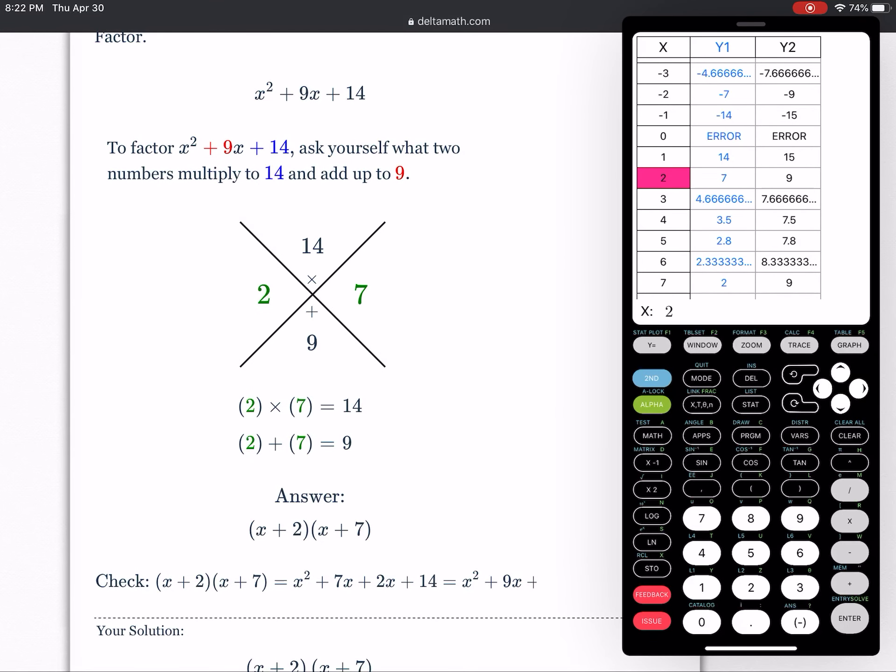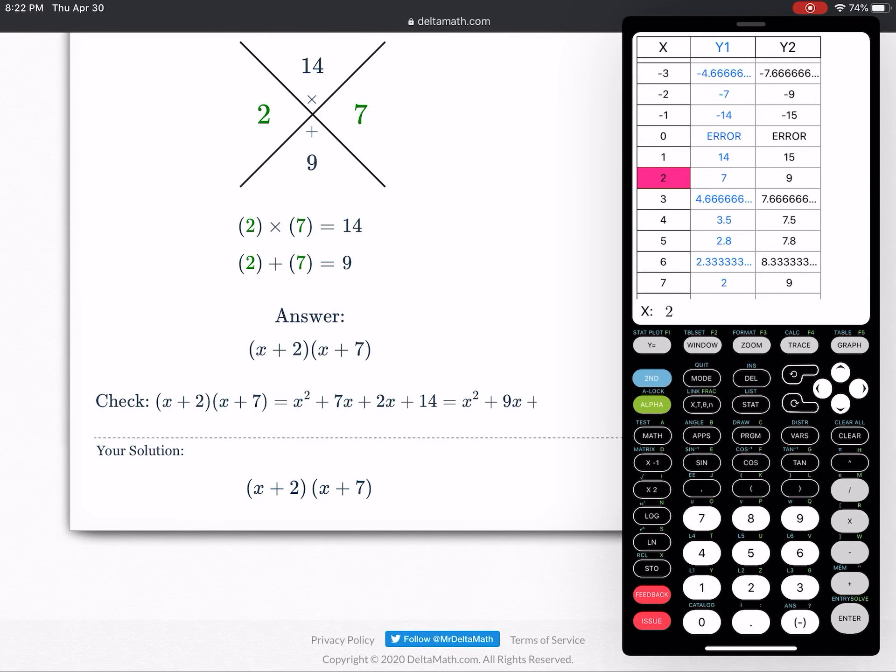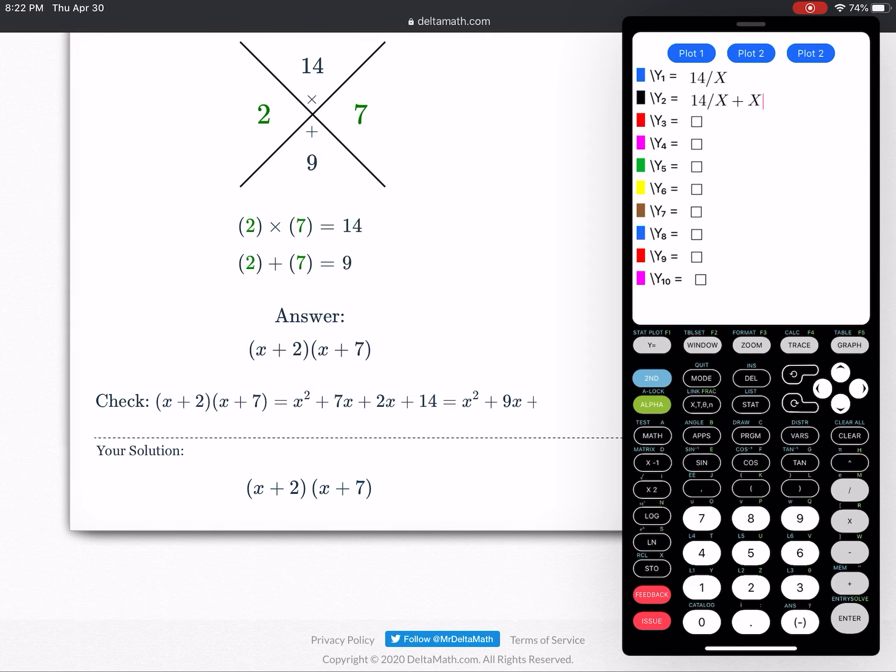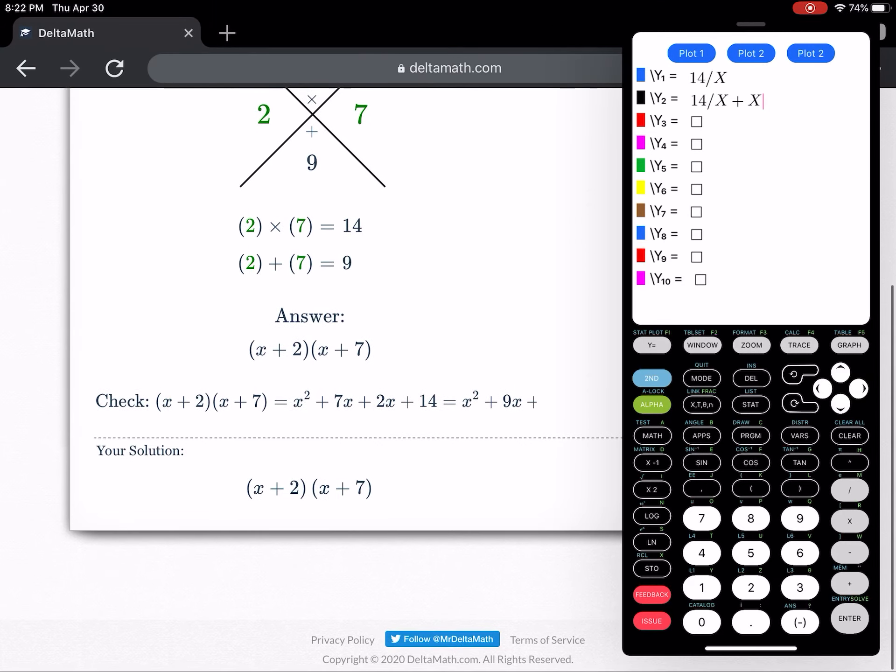Now, they use what's called the x game here. And we've talked about this before in class. But basically what happens here is you're looking for ways to multiply to 14, add to 9, and that would be the number 2 and the number 7. Now remember, we do all of this work here that they're showing you with the calculator. We use y equals in the calculator. So that's what you're going to want to do.